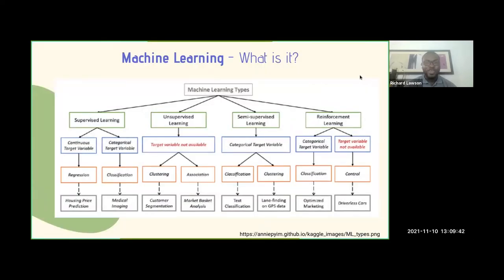When we ask why machine learning and what are the machine learning types, we have supervised learning, unsupervised learning, semi-supervised learning, and reinforcement learning. With supervised learning, there is a continuous target variable, which boils down to regression and classification. An example of regression is housing price prediction in real estate. For classification, we have medical imaging that is used by healthcare practitioners to detect certain diseases in the human body.